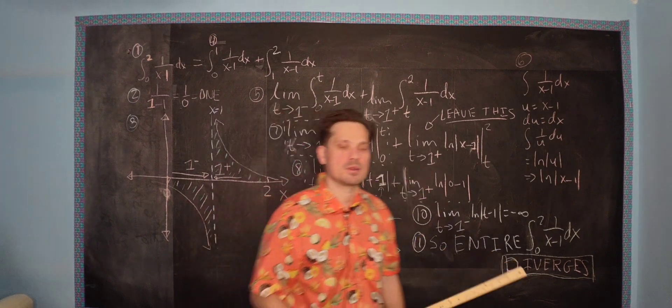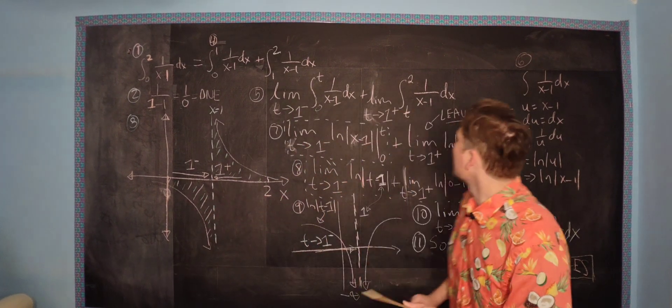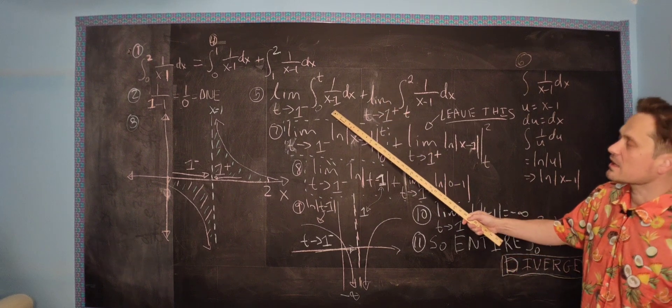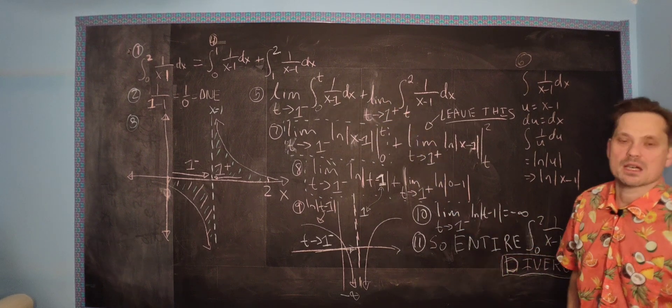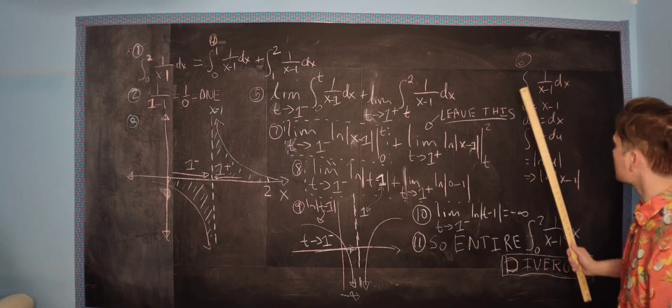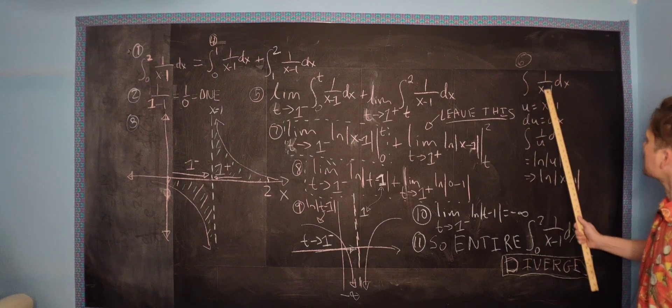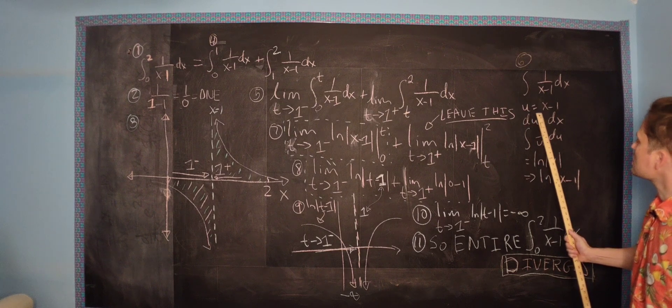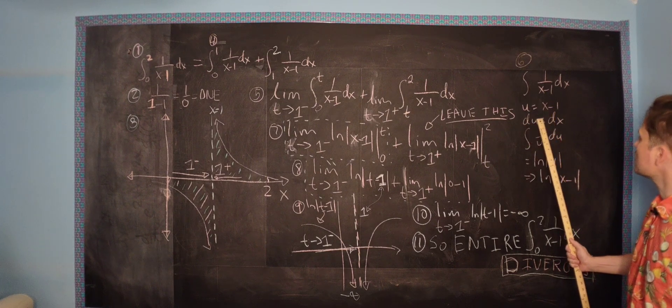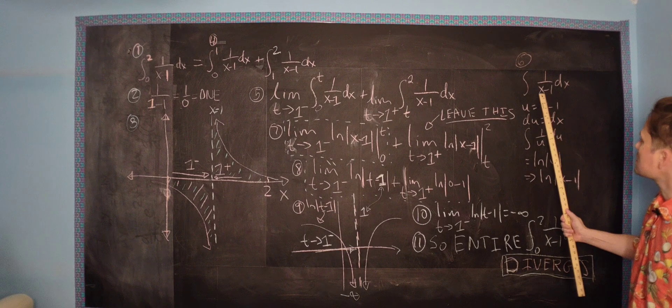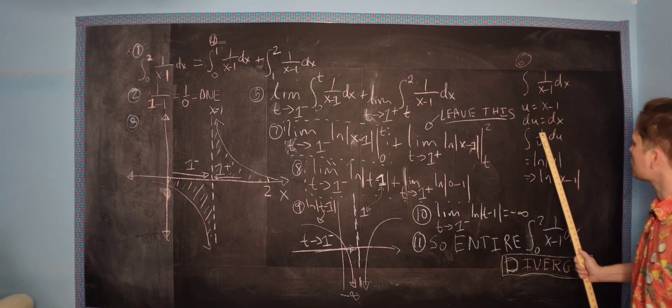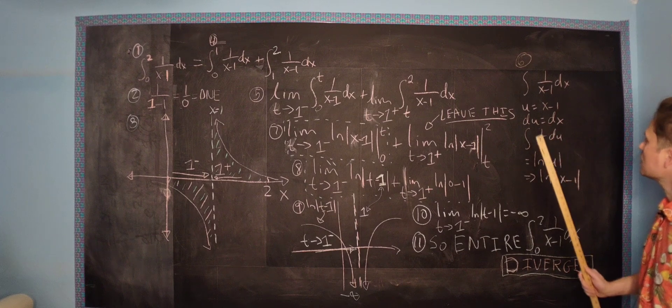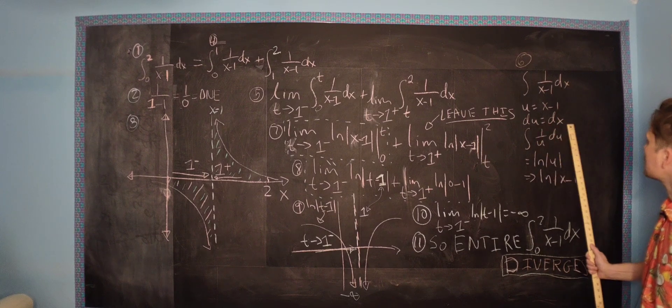Step number 6. We have to first find the antiderivative of 1 over x minus 1. Take a look. 1 over x minus 1. You can set u equal to x minus 1. Differentiating this gives us du equals dx. Since x minus 1 is u, we can write 1 over u. And since dx is du, we can write 1 over u du, just replace dx with du.